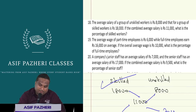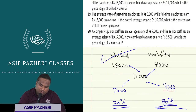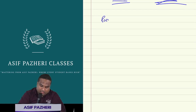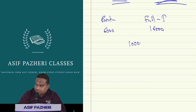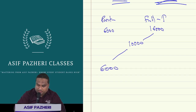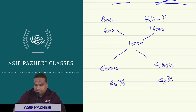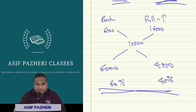Question 19: Part-time worker salary is Rs. 6,000. Full-time worker salary is Rs. 16,000. Combined average salary is Rs. 10,000. Applying the technique gives a ratio, resulting in 60 percent and 40 percent.